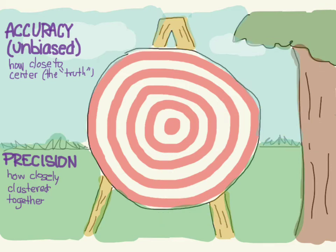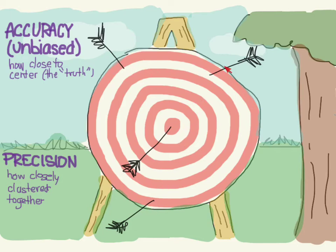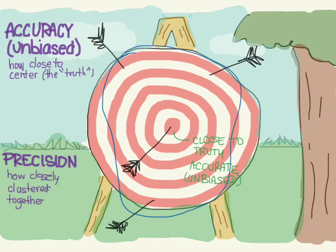Let's do the last one. So these are kind of close to the truth, and if you were to average these three, they would actually average to being in the center as well. So we could call this accurate or unbiased. But if we look at how it's clustered, this is also all over the place, so it's not really clustered together, so it would be imprecise because they are so spread apart.